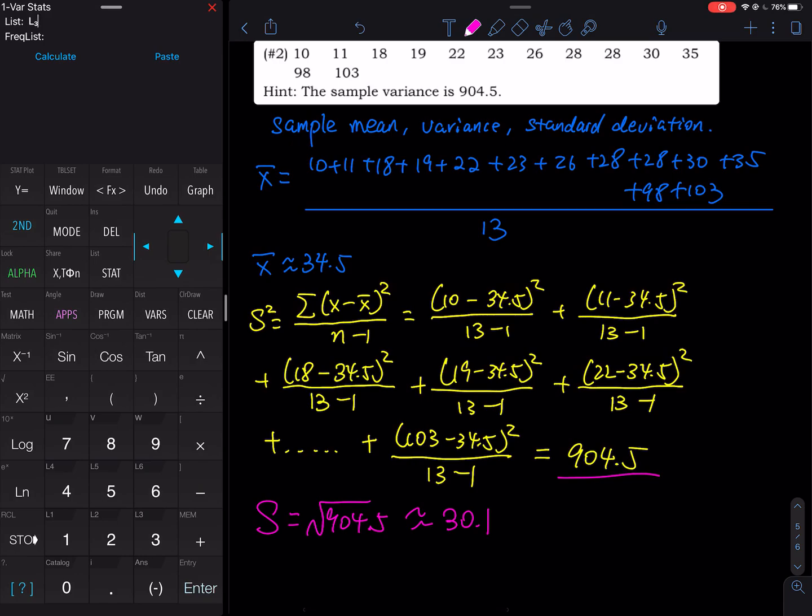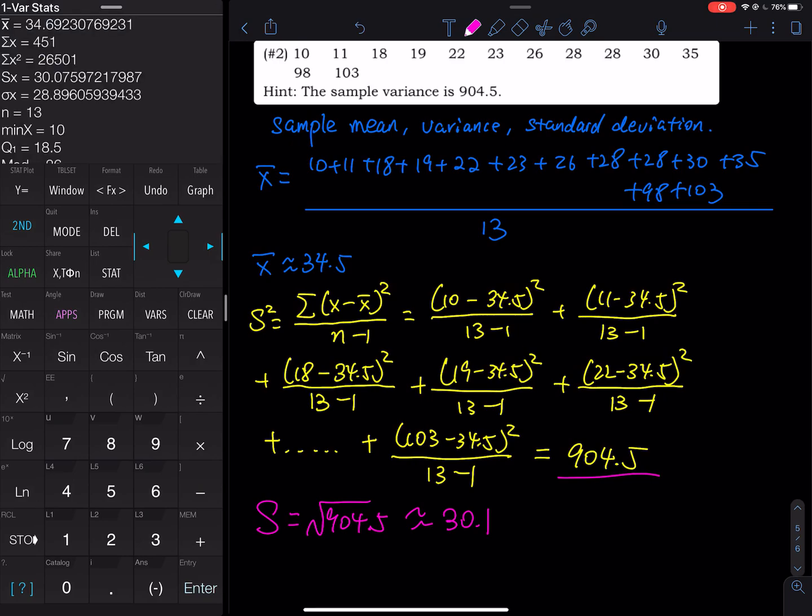So back to my screen. I am going to ignore the frequency list. We don't need that. We go straight to calculate. And then the first one, x̄ is the sample mean. And then sum of x, you don't need that, is 451.